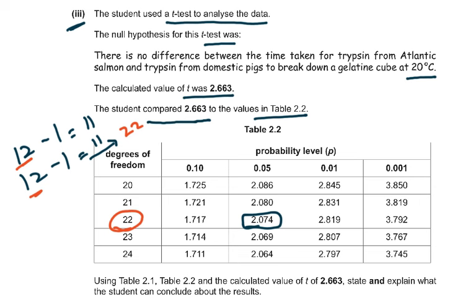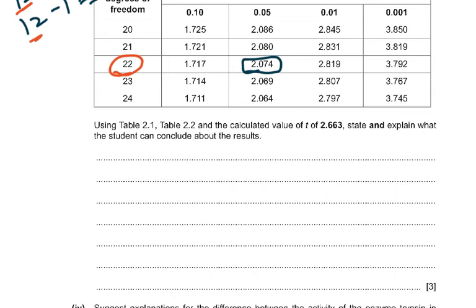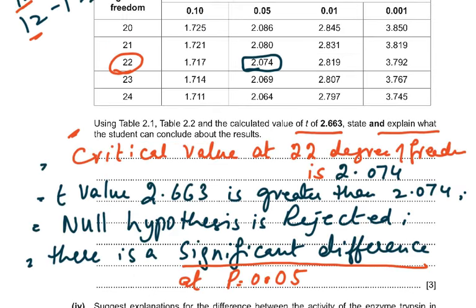The calculated t-value of 2.663 is greater than the critical value of 2.074 — writing that alone earns a mark. The t-value being greater than the critical value earns a second mark. When the t-value is greater than the critical value, the null hypothesis is rejected, meaning there is a significant difference at probability 0.05. These are the exact wordings to use — memorize and understand them. Critical value at 22 degrees of freedom is 2.074; t-value 2.663 is greater than 2.074; null hypothesis is rejected; there is a significant difference at p = 0.05.